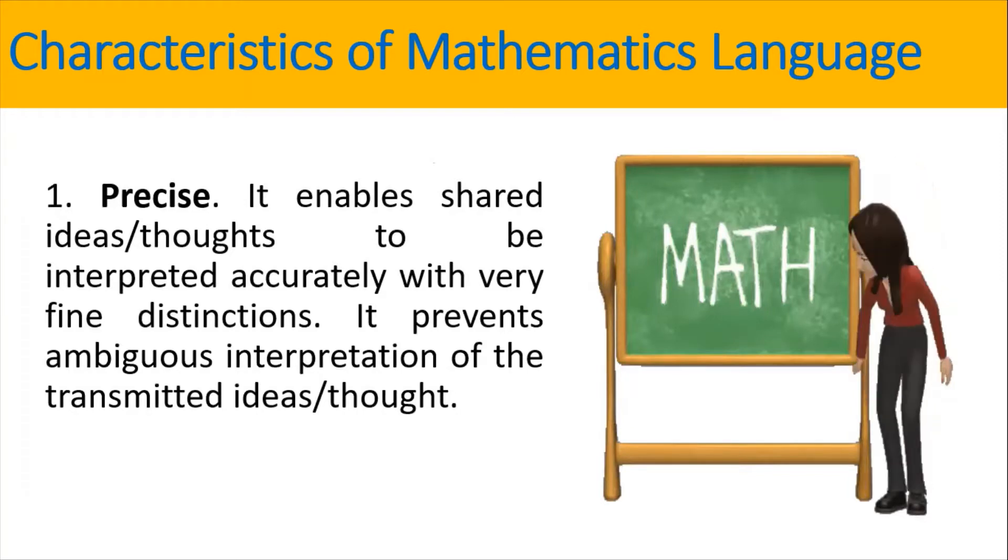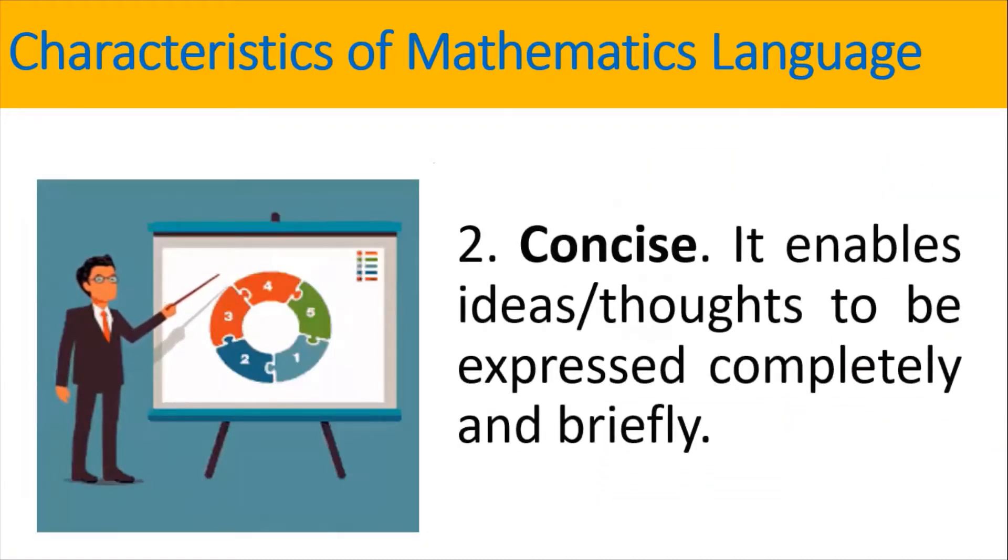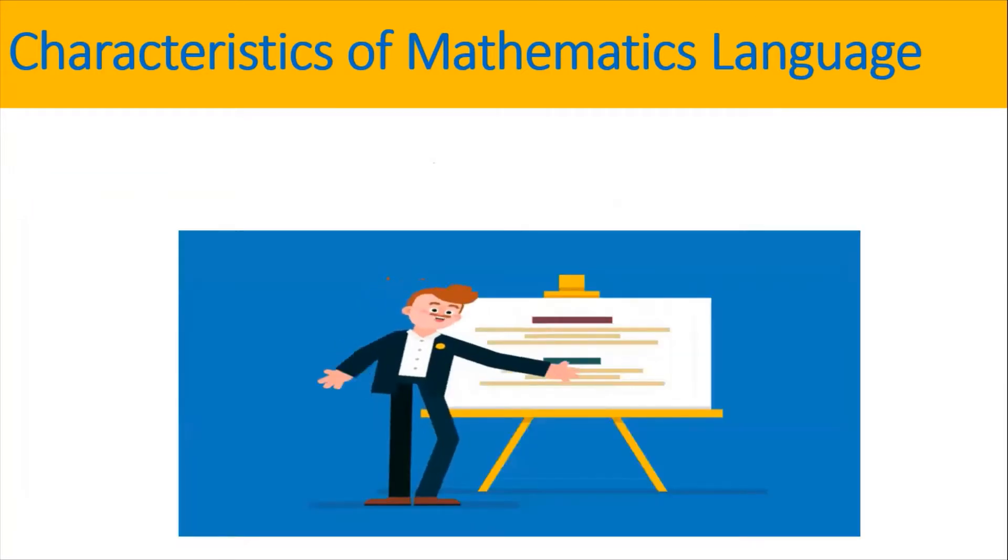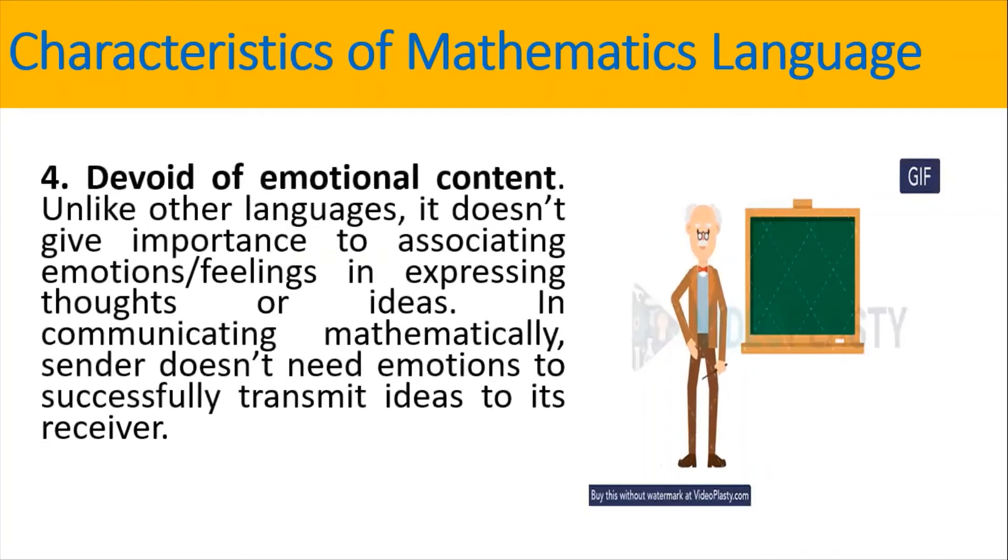Another one is concise. It enables ideas or thoughts to be expressed completely and briefly. Third, powerful. It enables one to express complex thoughts with relative ease. Another, devoid of emotional content. What do you mean by this? Unlike other languages, it doesn't give importance to associating emotions, feelings, and expressing thoughts or ideas. In communicating mathematically, one doesn't need emotions to successfully translate ideas to its receiver.